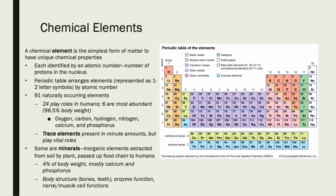Chemical elements are the simplest form of matter to possess unique chemical properties. They are a pure substance — one single type of atom. Each element is identified by its atomic number, which is the number of protons in the nucleus. Every element is numbered based on how many protons it has. It doesn't matter how many electrons or neutrons it has, just protons — protons give it its identity and its number. The periodic table is arranged in order starting at 1 and going up. The first element is hydrogen with 1 proton, then helium with 2, then lithium with 3, and so forth. Every element has a 1 or 2 letter symbol.